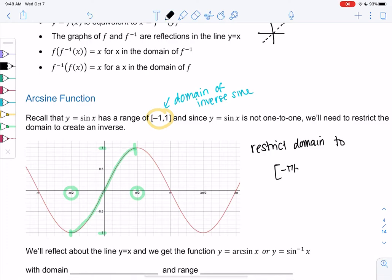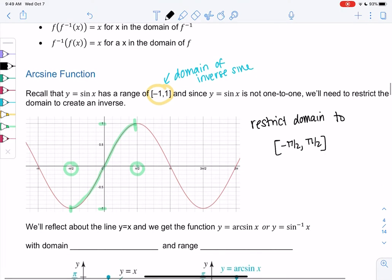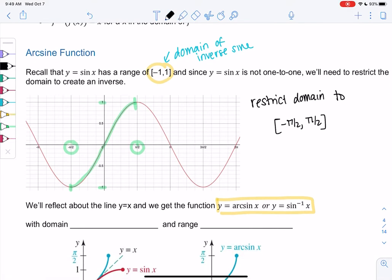And so then we call the inverse sine - sometimes we call it arcsine, or we call it sine to the negative one power. It's not like one over sine, it's an inverse function. So that's not the same as one over sine x. That's why people might prefer arcsine - it's an inverse function.